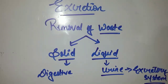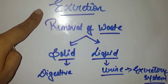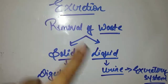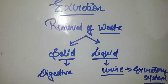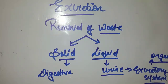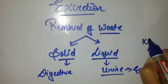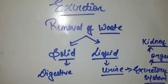Today we are understanding the process of excretion. The waste removed from our body is in liquid form, that is urine, and the organ system through which it is removed is the excretory system. The excretory system is not a single organ but contains specific organs. The major organ is the kidney, which actually helps us in urine production.